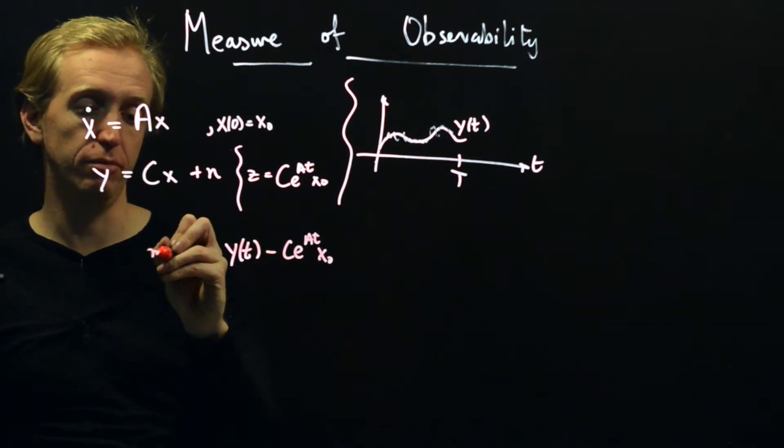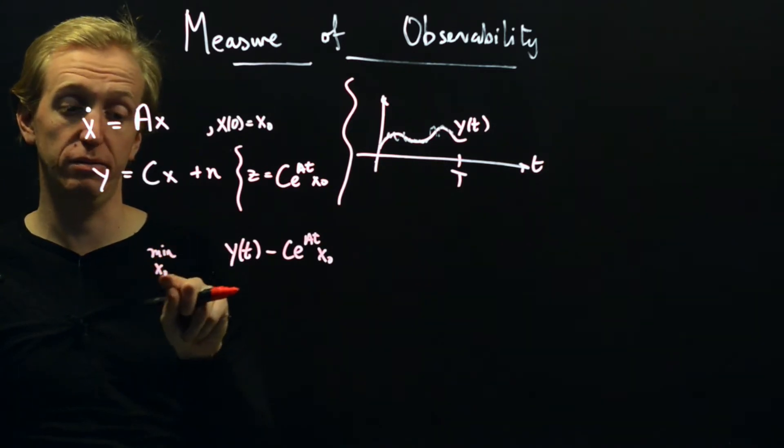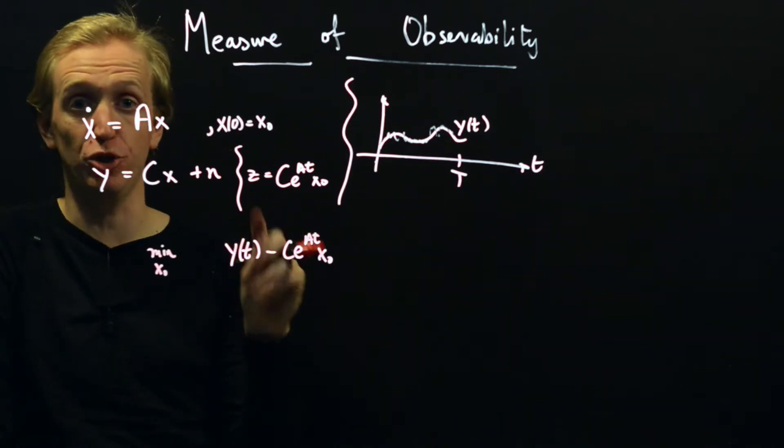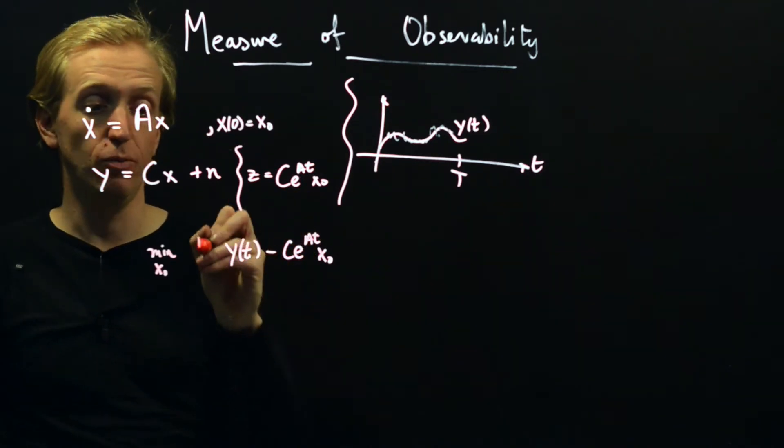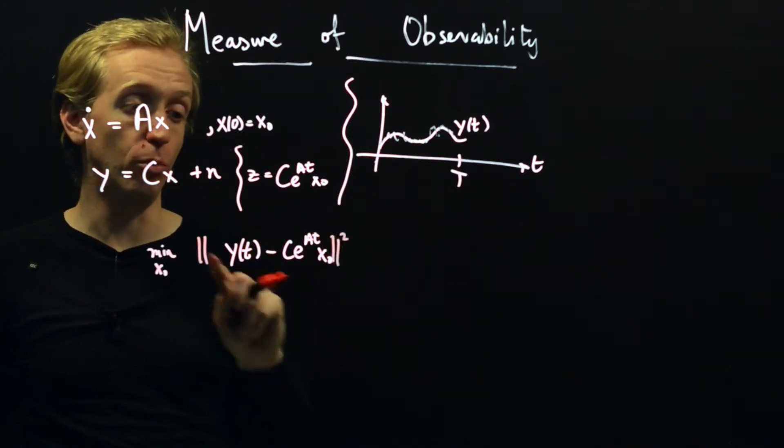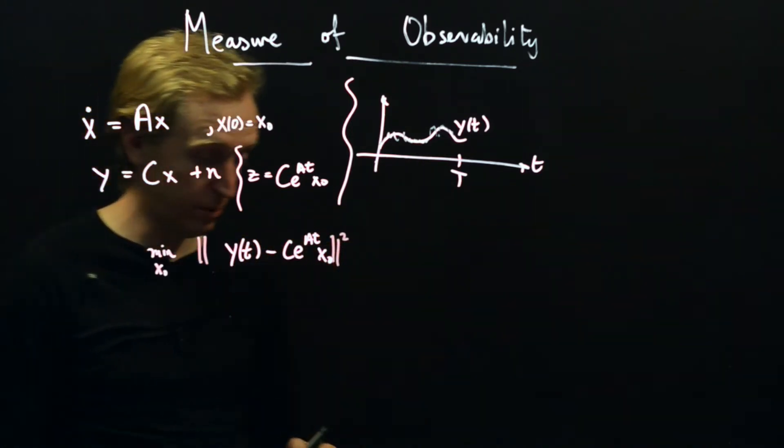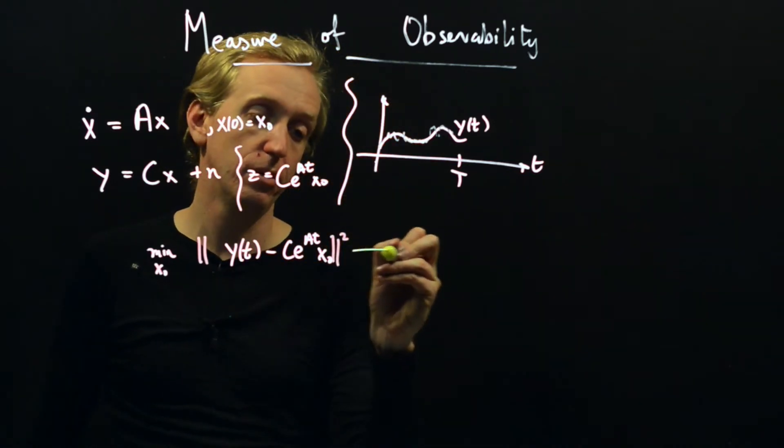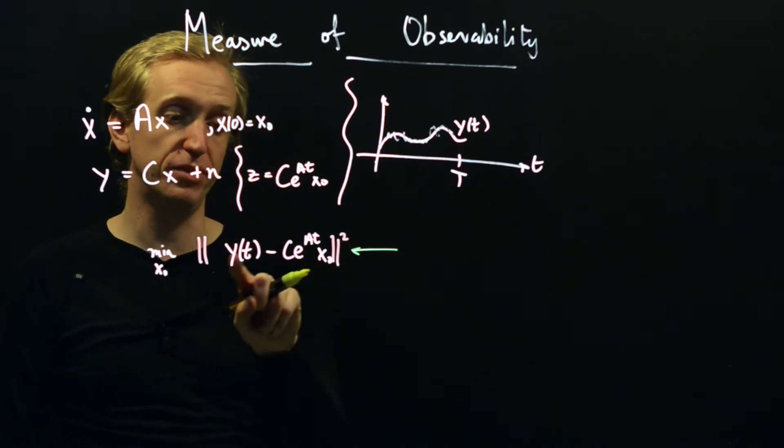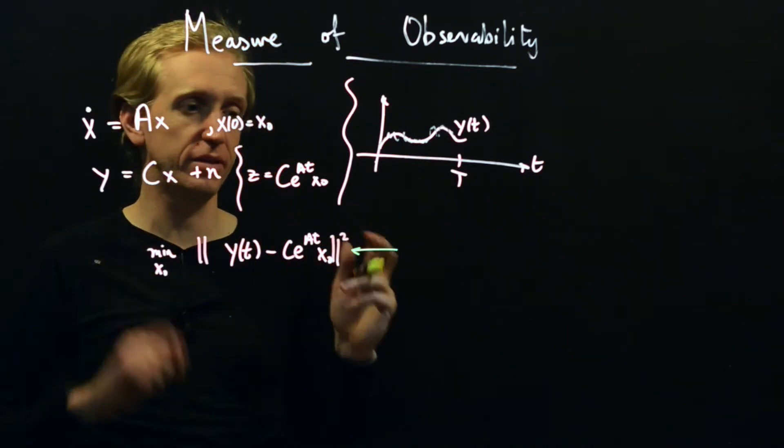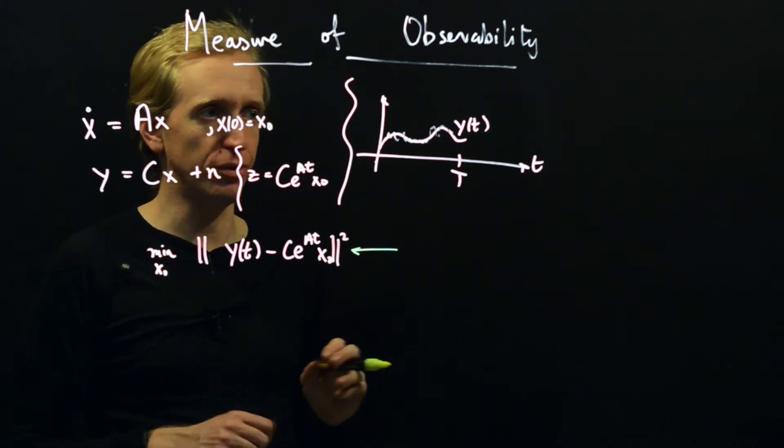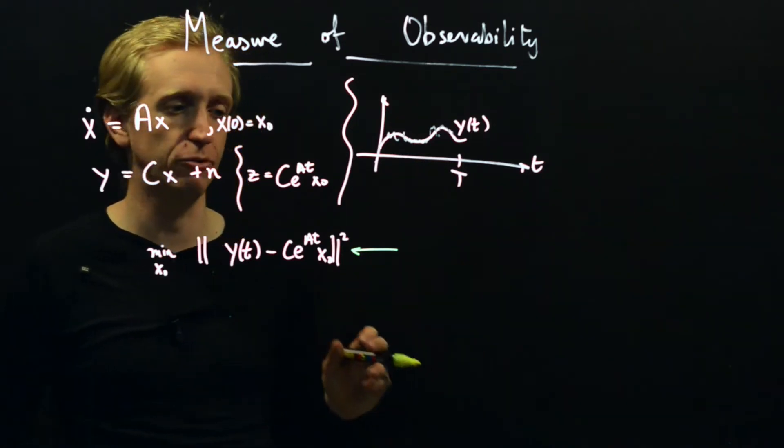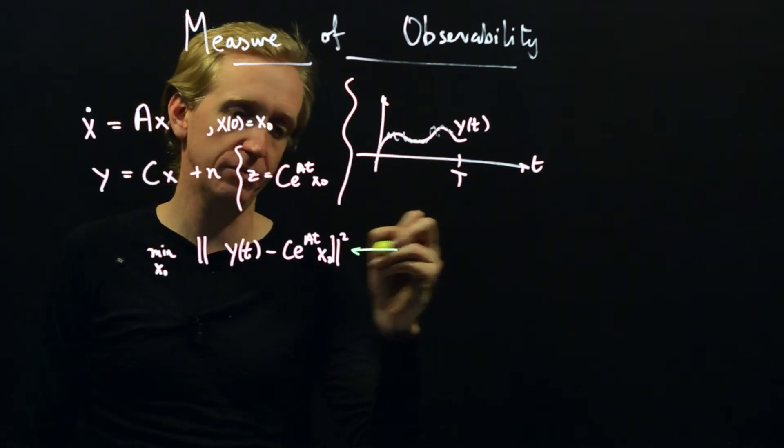So we would want to minimize over all choices of the initial condition x0 to make this difference as small as possible. And how should we measure the size of this error? Well, we should use our two-norm friend again. So what's going on here? Well, we've got functions of time, so our norm is going to be given by our infinite dimensional x1 squared plus x2 squared plus x3 squared, kind of normal Pythagorean notion of length.